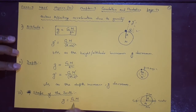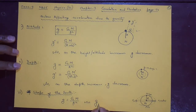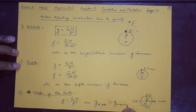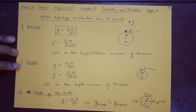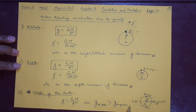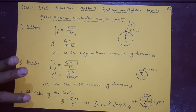Looking at g = GM/r²: at the poles, the radius is less, so g will be more. At the equator, the radius is more, so g will be less. So acceleration due to gravity is greater at the poles than at the equator. These are the three factors — altitude, depth, and shape of the earth — that affect acceleration due to gravity. Thank you.